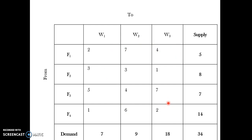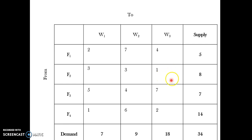The least cost available is 1 rupee, appearing in two cells: F2→W3 and F4→W1. When there is a tie, my advice is to choose the cell where you can allocate the maximum number of units. If I choose F2→W3, W3 requires 18 units but F2 can only produce 8 units, so I can only ship 8 units there.